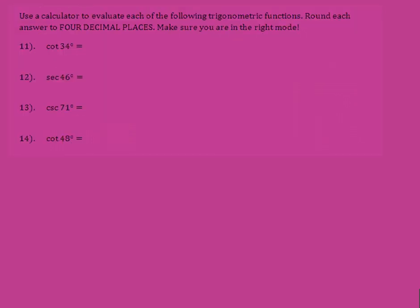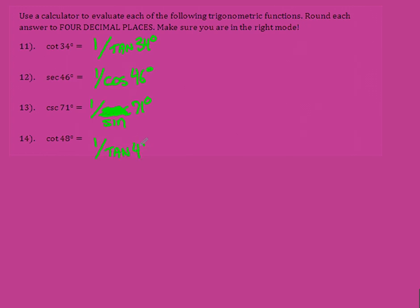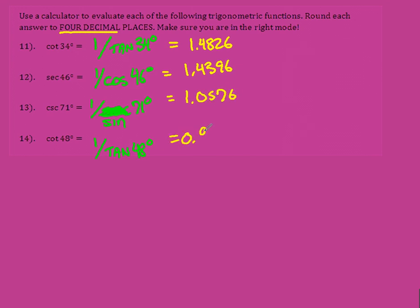These are really simple — just plug into your calculator. Remember: cotangent we type as 1 divided by tangent of 34 degrees. Similarly, secant is 1 divided by cosine of 46 degrees. Cosecant of 71 degrees is 1 divided by sine of 71 degrees. And cotangent of 48 degrees is 1 divided by tangent of 48 degrees. Read the answers to 4 decimal places: 1.4826, 1.4396, 1.0576, and 0.9004.